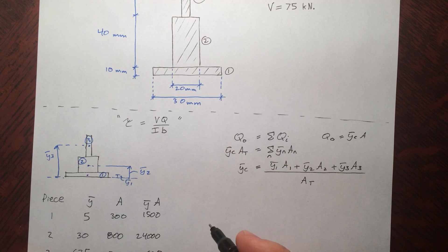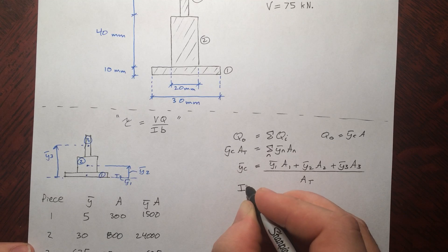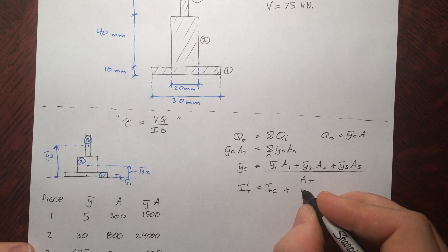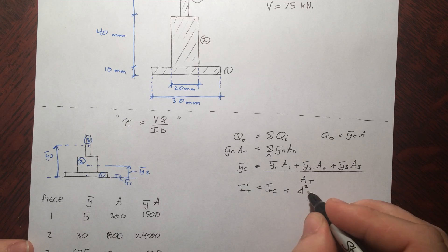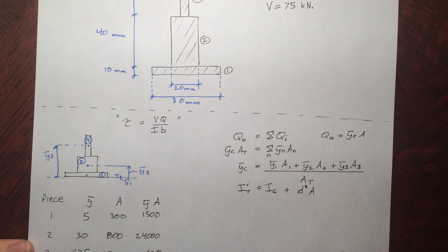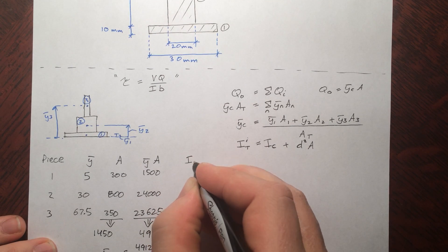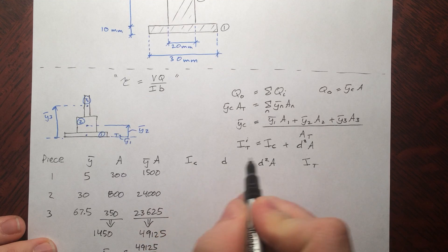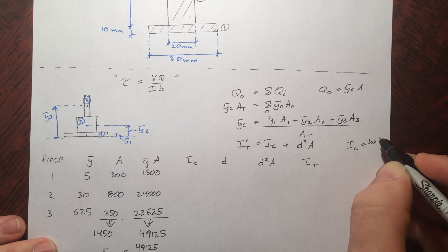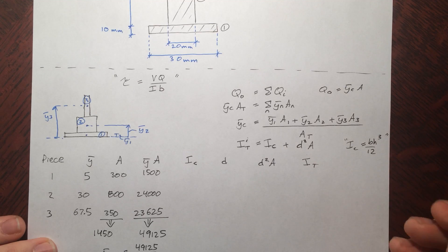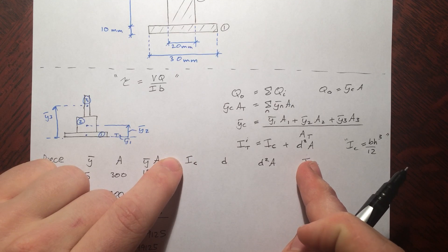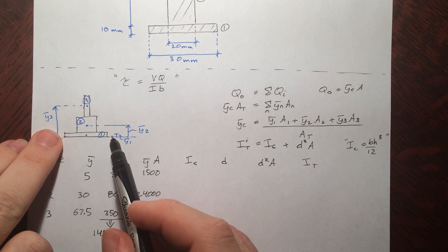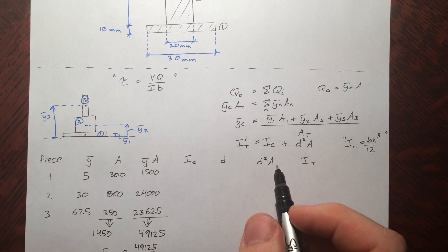Now let's find the moment of inertia. The total moment of inertia of an individual piece is the moment of inertia of itself about its own centroid, plus the distance away from the centroidal axis squared, times the area of the piece itself. So IC is base times height cubed divided by 12. For the bottom one, that's 30 times 10 cubed divided by 12, and then the same for all the other ones.